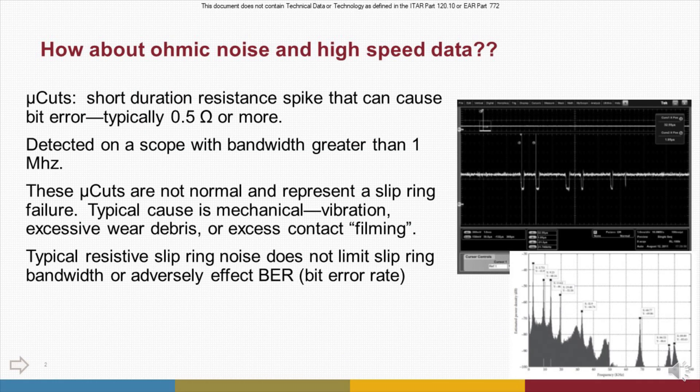There is another type of resistive noise that has come to the forefront when passing high-speed digital signals through slip rings. This noise is in the form of very short duration resistance spikes that can cause bit errors, and such a noise event is frequently called a microcut. These are detected on oscilloscopes at measurement bandwidths of greater than 1 megahertz and can become problematic if they reach values of several hundred milliohms. It is important to understand that these microcuts are not normal and represent a bit of slip ring failure if they cause reduction in bit error rates below acceptable levels.